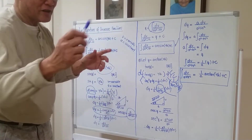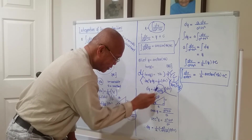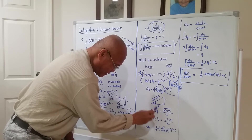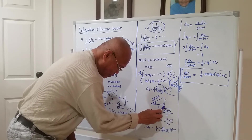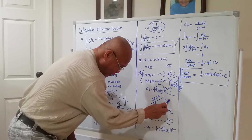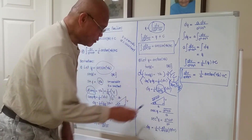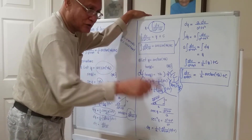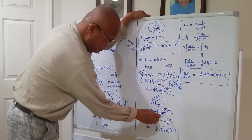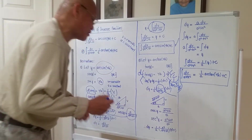Using the right-triangle method: tangent of y is b over a, which is opposite over adjacent. So the opposite side is b and the adjacent is a. The hypotenuse will be the square root of a² plus b². From here we can take the value of secant of y. By definition, secant is hypotenuse over adjacent, so secant of y equals the square root of a² plus b² over a. We need secant squared of y, so squaring both sides: secant squared of y equals a² plus b² over a².